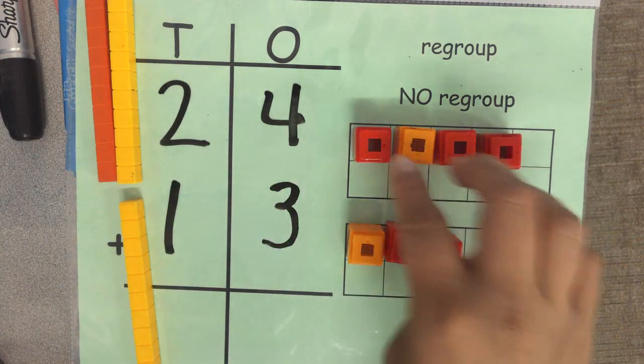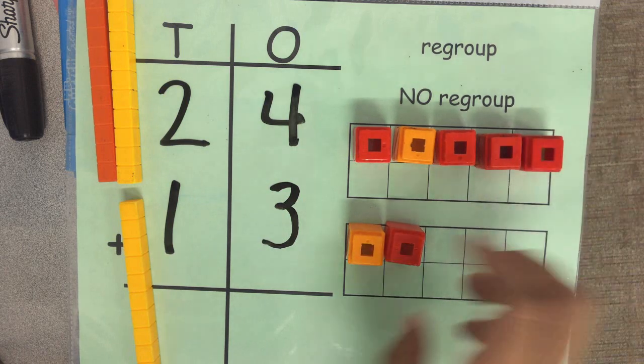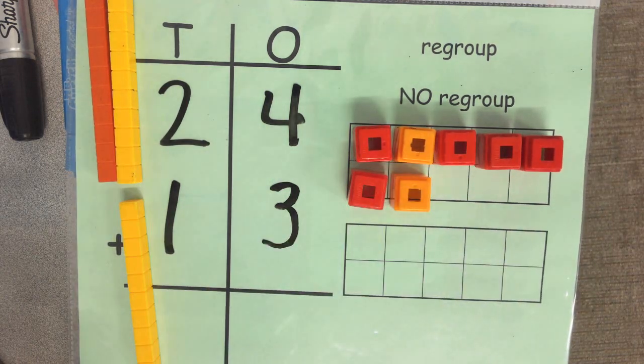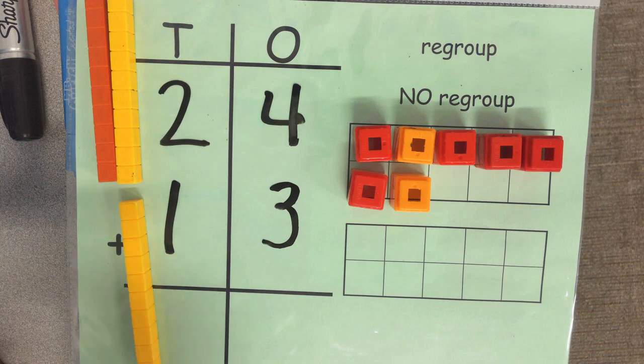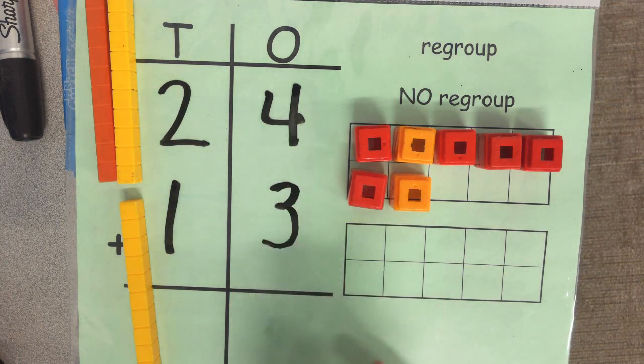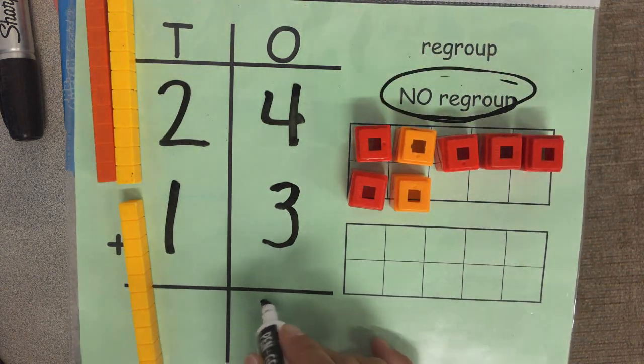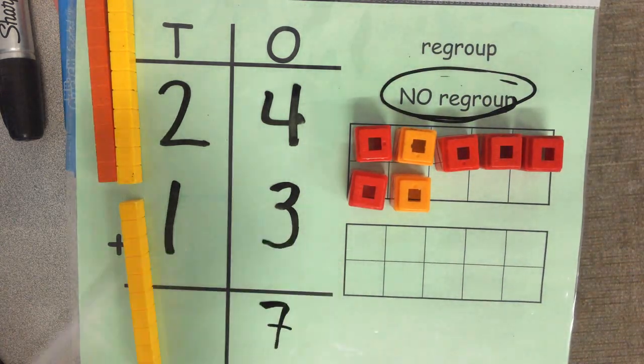So let's go ahead and count. This is 4. Start with your biggest number. 4, 5, 6, 7. Did we make a group of 10? No. That means 7. So I'm just going to circle 'no regroup' because we didn't need to regroup. And write my number 7. We have 7 ones.